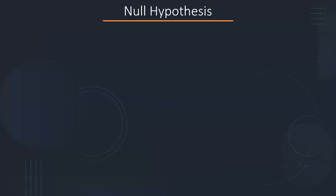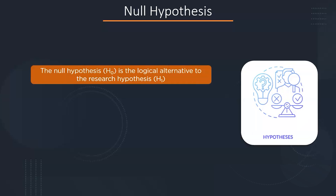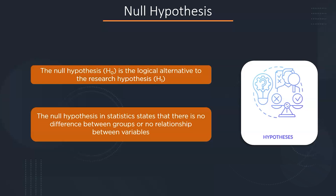In hypothesis testing, there is one major term — the null hypothesis. A null hypothesis expresses the opposite of what a researcher or experimenter predicts or anticipates. It essentially defines the statement that no exact or actual relationship exists between the variables. Usually, it is denoted by H₀.